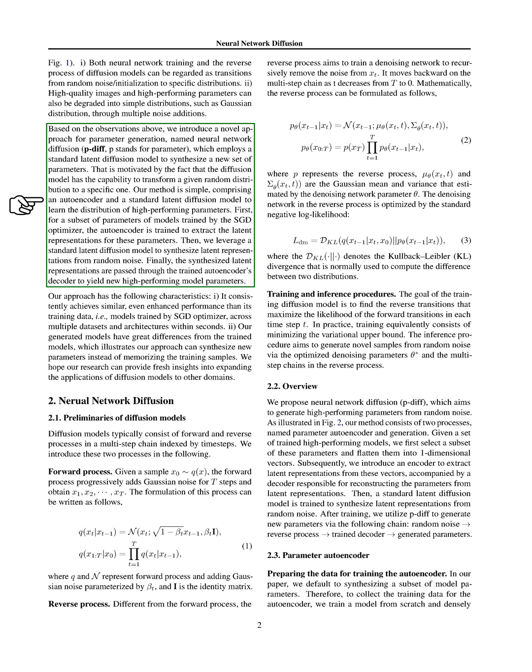Then, we use a standard latent diffusion model to create latent representations from random noise. Finally, these representations are passed through the decoder of the trained autoencoder to produce new, high-performing model parameters.